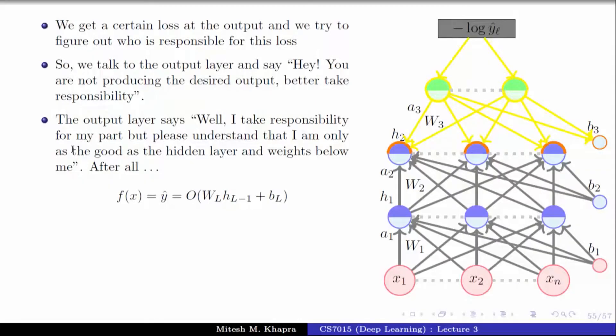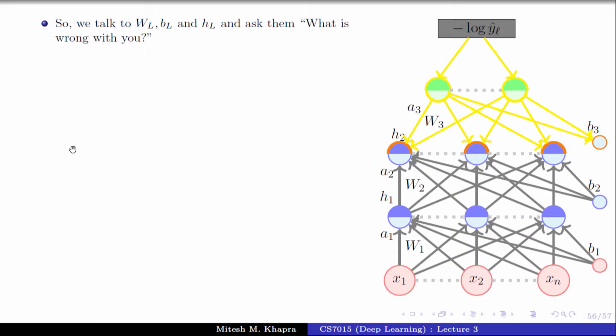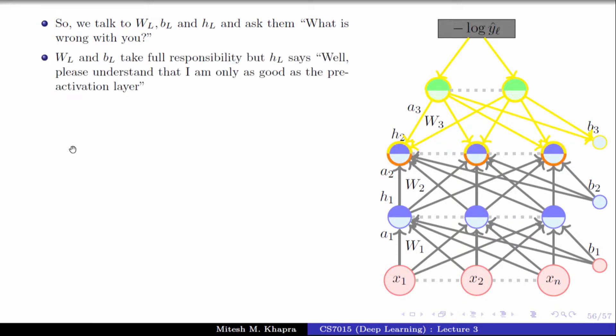So we continue our investigation and go ask the previous layer. The output layer says: I just took the output from the previous layer, did some simple transformation, and gave you the output — so if I am wrong, the previous layer was wrong, go catch that guy. Now the previous layer will again say: I take responsibility for my part, but I'm only as good as the hidden layer and the weights before me. The hidden layer will keep redirecting back to the previous layer and weights, all the way to the input. So which are the guys ultimately responsible? All the weights and all the biases.